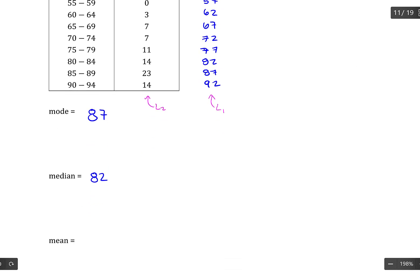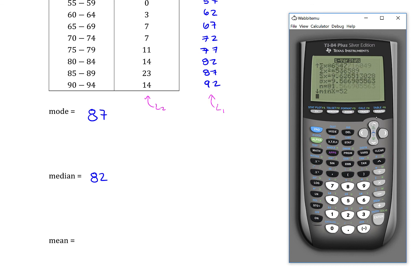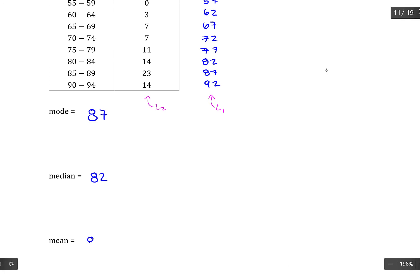And then the mean. The mean, we scroll back up to find the value of that. The weighted mean is 80.83. We'll round to two decimals.